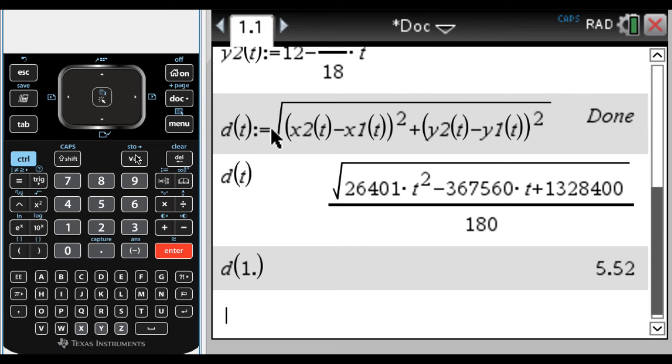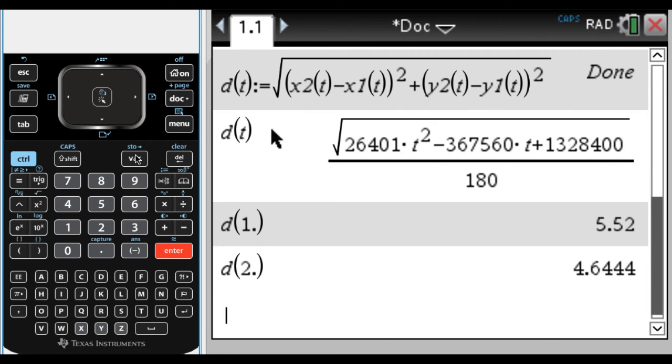That's how far apart the two things are at t equals one. And so we can sit here and punch these in, and you can see, so at two, they're closer together. But a better thing to do, I think, is to look at what the equation looks like.